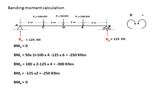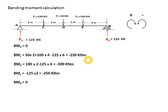Now for bending moment calculation. I'm starting from the left hand side. Sign convention: clockwise is positive. Bending moment at A is zero. Bending moment at C: taking the right hand side, 100×4 (P2 into 2 — sorry, 50×2 makes clockwise positive), 100×4 positive, and 125×6 makes a negative moment.